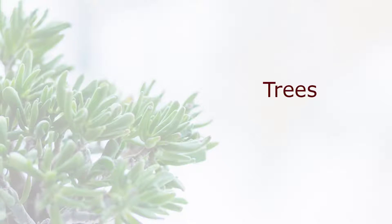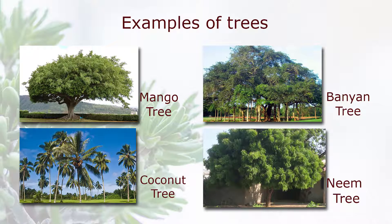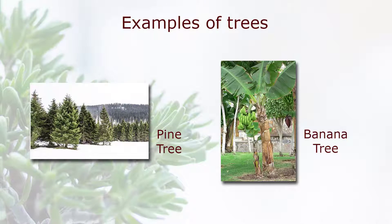Trees. A very big and tall plant is called a tree. Trees are very strong and stand straight. A tree has one very strong woody stem which is called the trunk. A tree trunk may be very thick or thin, long or short. Some trees live for many years. Examples of trees: mango tree, coconut tree, banyan tree, neem tree, pine tree, and banana tree.